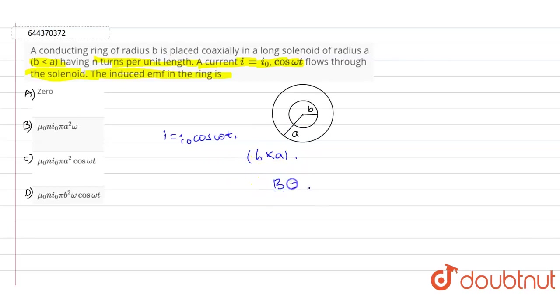The magnetic field B = μ₀n i₀ cos(ωt). This is the value of B. The area becomes πr².